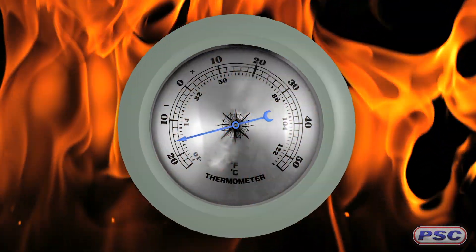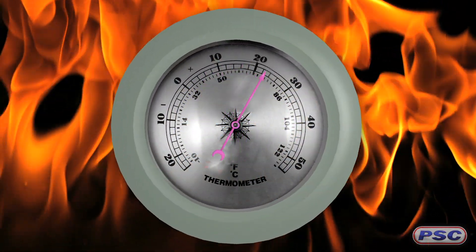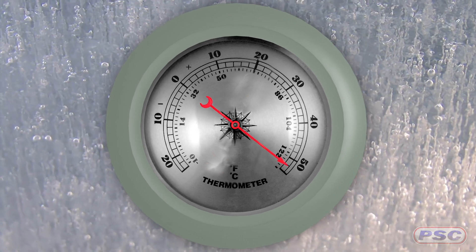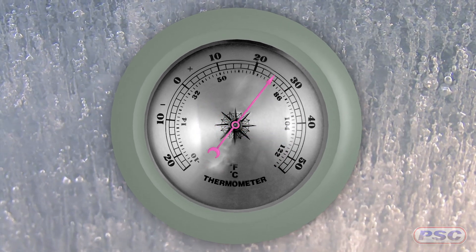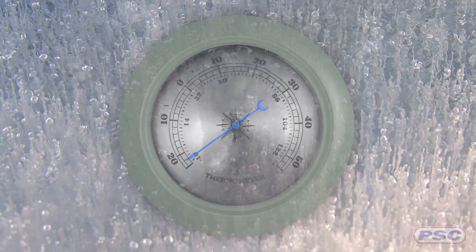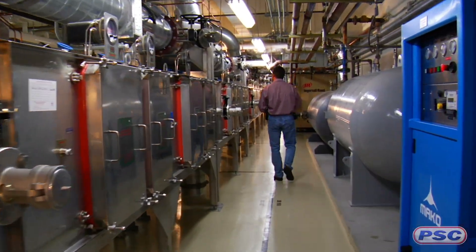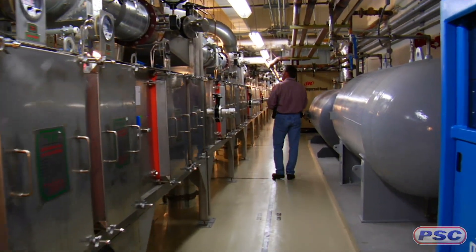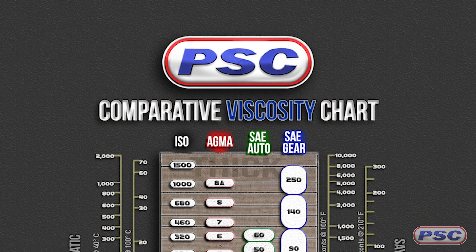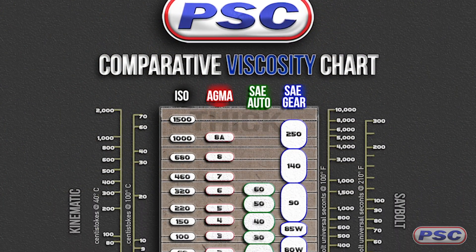These VI improving additives in the oil actually expand their form as temperatures rise to prevent viscosity thinning, and they contract when temperatures get cold so that the oil continues to flow. This again gives the oil a higher rating.